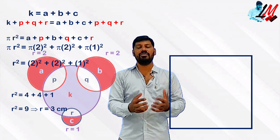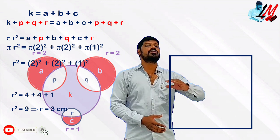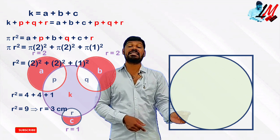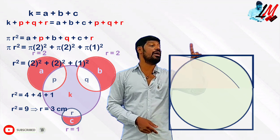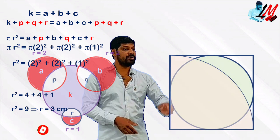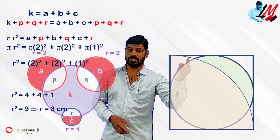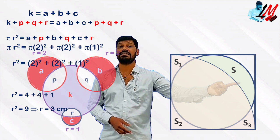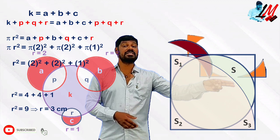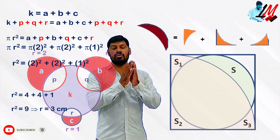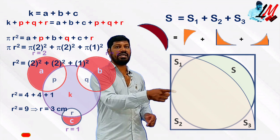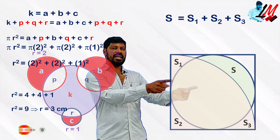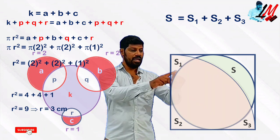A square is given in which the side is unknown, and one circle is inscribed in it. Apart from the circle, with one vertex as center and the side as radius, a quadrant has been constructed. If you see carefully, name this portion S1, this as S2, this as S3, and whatever crescent you can see here — name it as S. They are asking to prove that S equals S1 plus S2 plus S3. Even without any numerical information we can prove this.